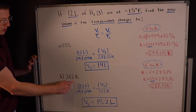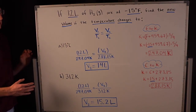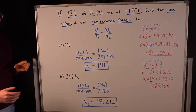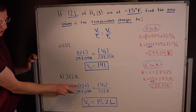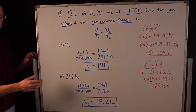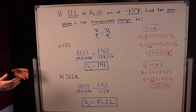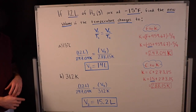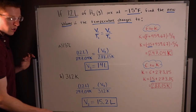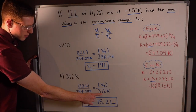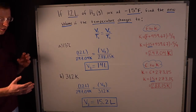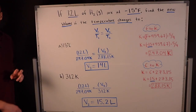Part B: what if we go to 312 Kelvin? We're already given Kelvin, so no conversion needed. Initial conditions are the same — 12 liters and 247.04 K from our earlier conversion. Setting up V1/T1 = V2/T2 with T2 = 312 K and solving for V2 gives 15.2 liters. Temperature went up even more this time — from 247 to 312 K versus 247 to 288 K — so we'd expect a bigger volume than 14 liters, and we got 15.2 liters. It checks out.